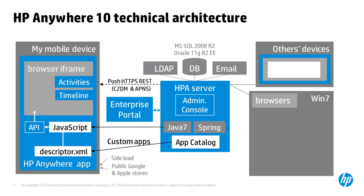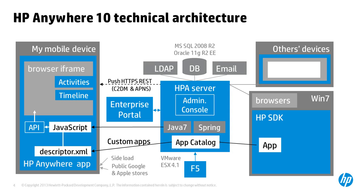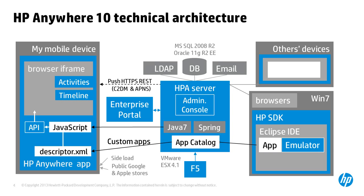For scalability, several HPA servers can run through an F5 load balancer and virtualize within VMware ESX 4.1. HPA Anywhere custom apps are developed using a system development kit from HP, which includes an Eclipse IDE and an emulator of renderings for the most popular devices.